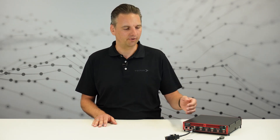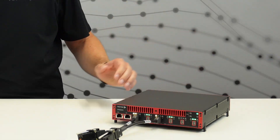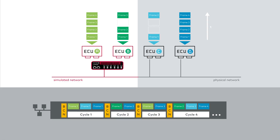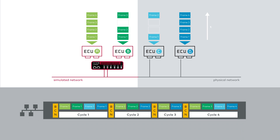This problem can simply be solved if each simulated node is given physical access to the network. With two individual node IDs for the simulation, each node has a transmit opportunity within one communication cycle. This still works quite well for two simulated nodes.